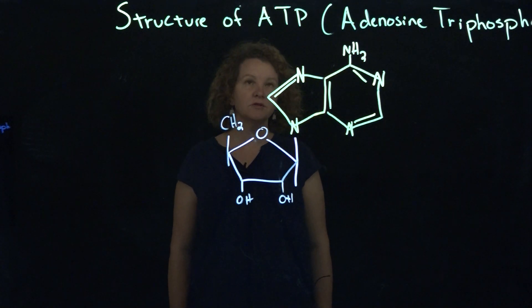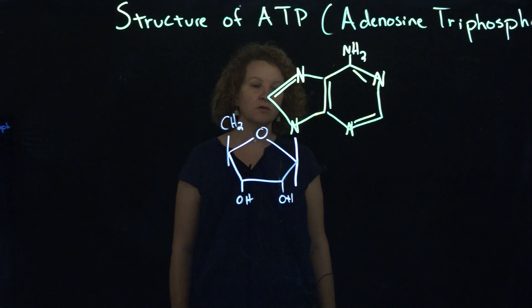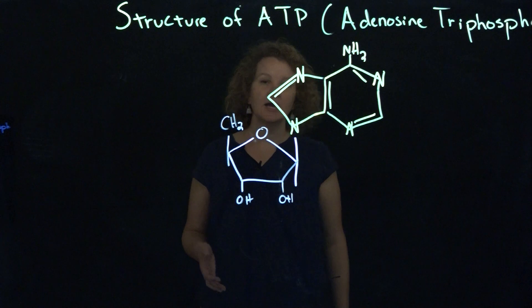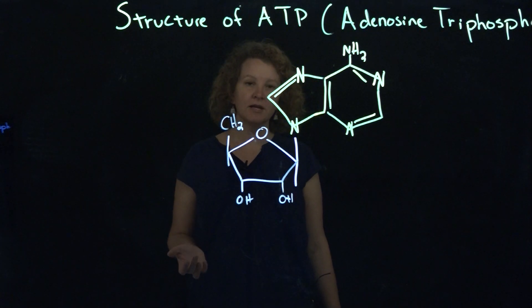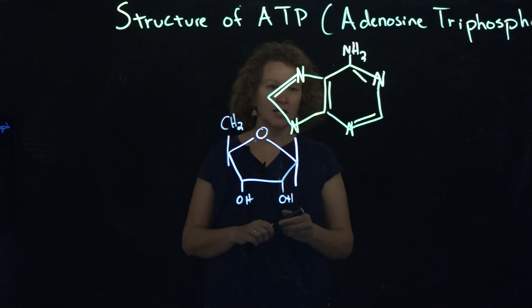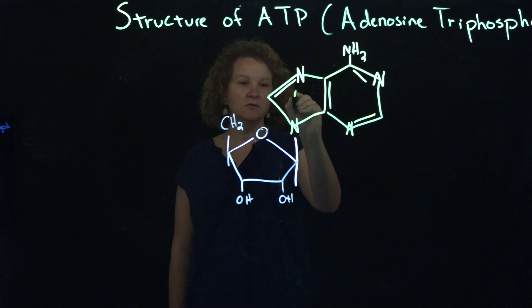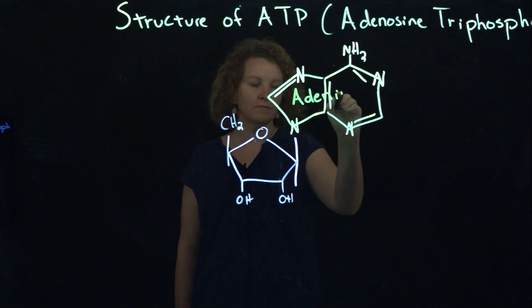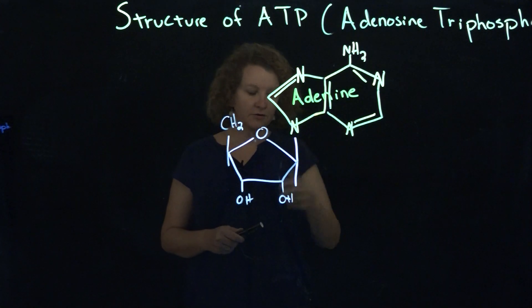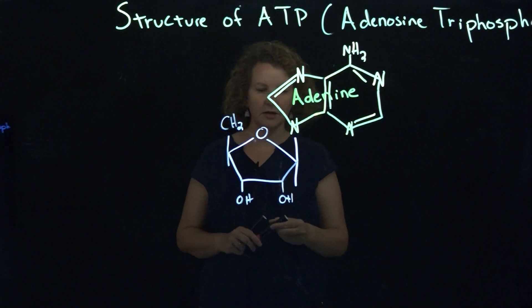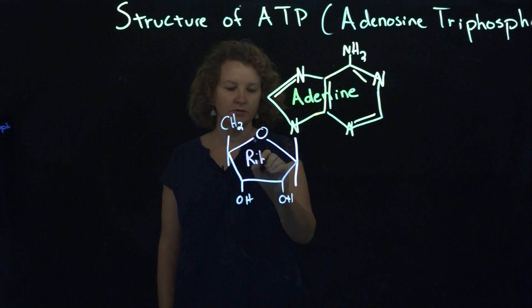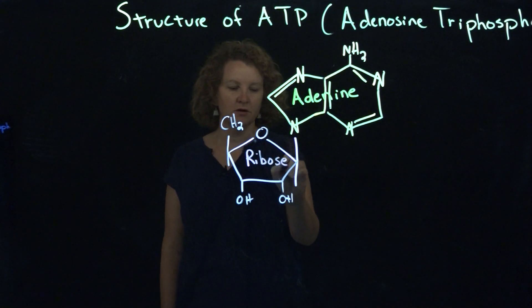Hi there, and welcome to a short overview of the structure of ATP, which is also known as adenosine triphosphate. ATP has similarities with RNA in the sense that it uses a nitrogenous base — the one you see here is adenine, which DNA also has — but the big similarity that links more to RNA is the presence of the ribose sugar that you also see in RNA.